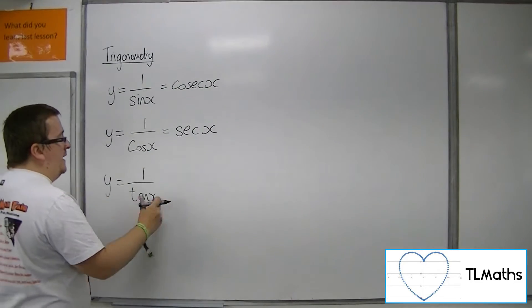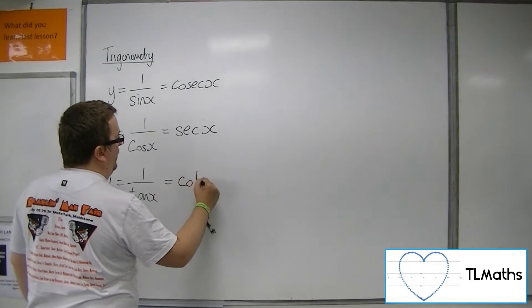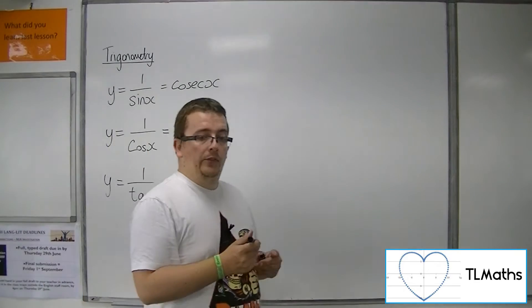And one over tan x is cot x, or cotangent of x.